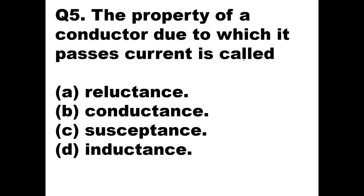Question 5: The property of a conductor due to which it passes current is called — ? Whenever there is a property to pass current, it is called conductance. So passing of current is conductance, and similarly opposing of current is called resistance.